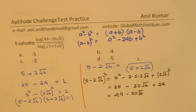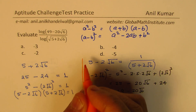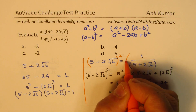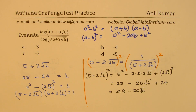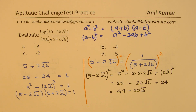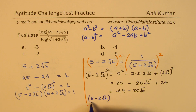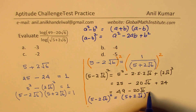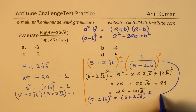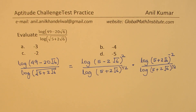Now, (5 minus 2 square root 6) whole squared can also be written as log of (5 plus 2 square root 6) to the power of minus 2, because we saw that 5 minus 2 square root 6 is the reciprocal of 5 plus 2 square root 6. So if we square both sides, we get (5 plus 2 square root 6) to the power of minus 2. Does it make sense? The denominator remains log of (5 plus 2 square root 6) to the power of one half.